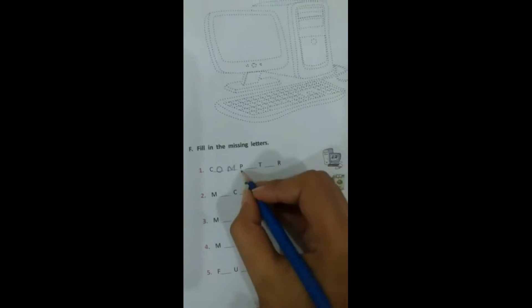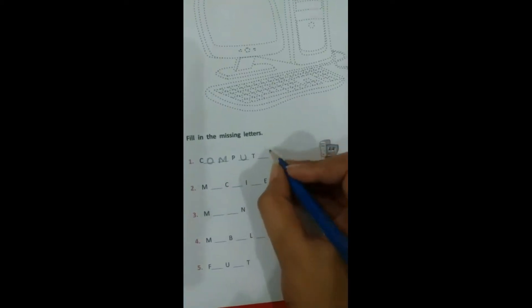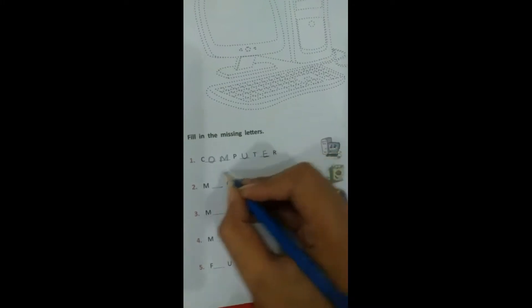The missing letter is O, then M, P, then U, then E. Computer.